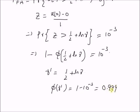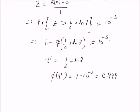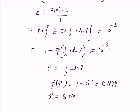From the standard normal CDF tables, we can clearly see that the value of gamma dash is equal to 3.08. Therefore, the threshold value is 3.08 for a probability of false alarm equal to 10⁻³.